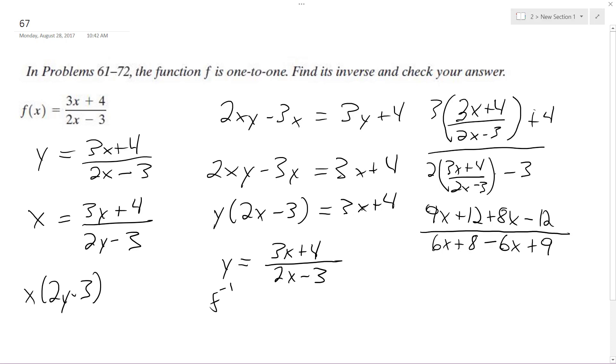This becomes 9x plus 12 plus 8x minus 12 over 6x plus 8 minus 6x plus 9. The 2x in both denominators cancel out. I'm just taking a couple shortcuts here for the proof. The most important thing is you got the inverse.